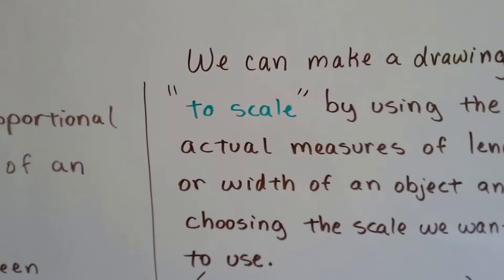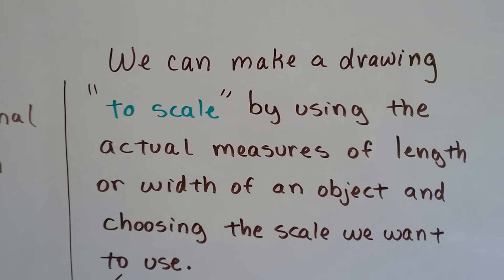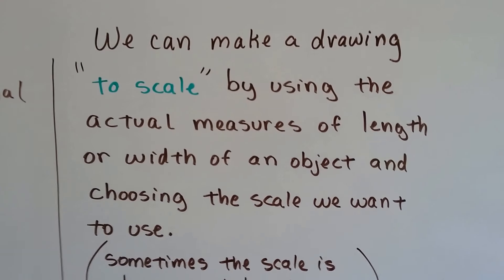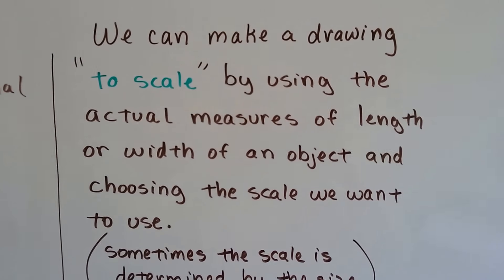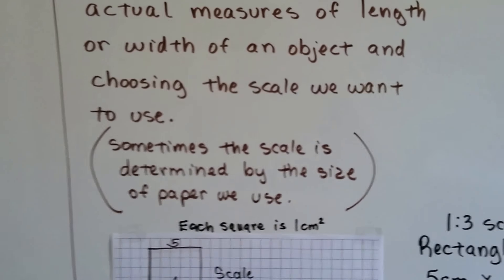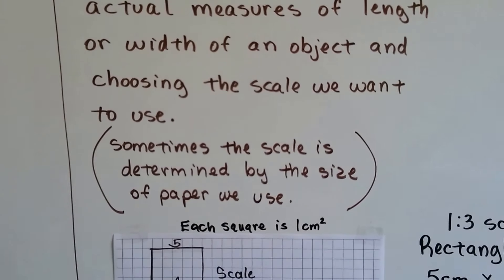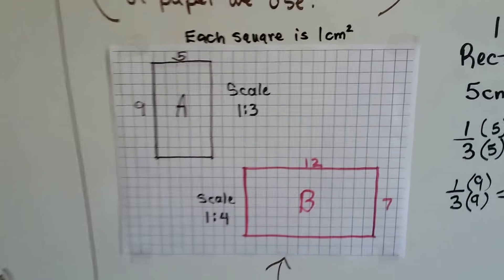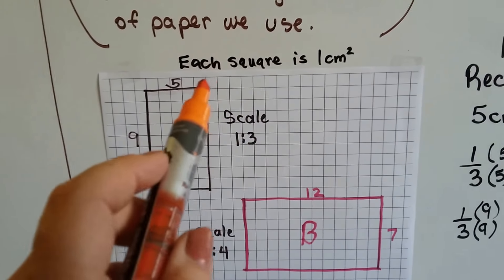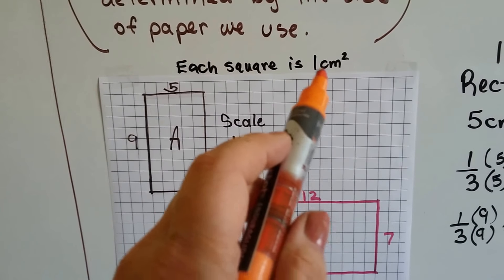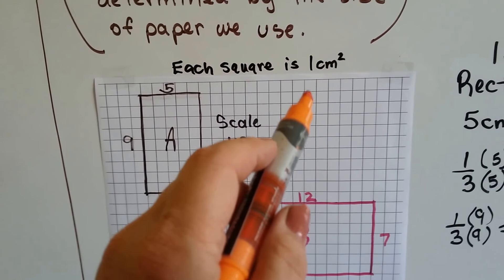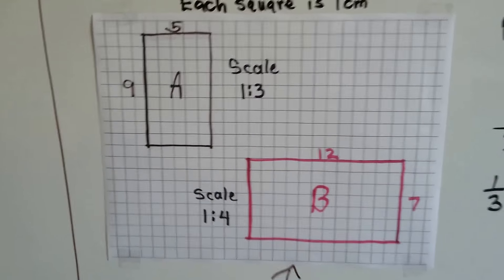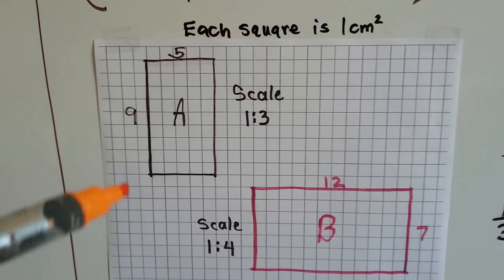We can make a drawing to scale by using the actual measures of length and width of an object and choosing the scale we want to use. Sometimes the scale is determined by the size of the paper we use. Here's a piece of paper where each square is one centimeter squared — one centimeter down and one centimeter across.